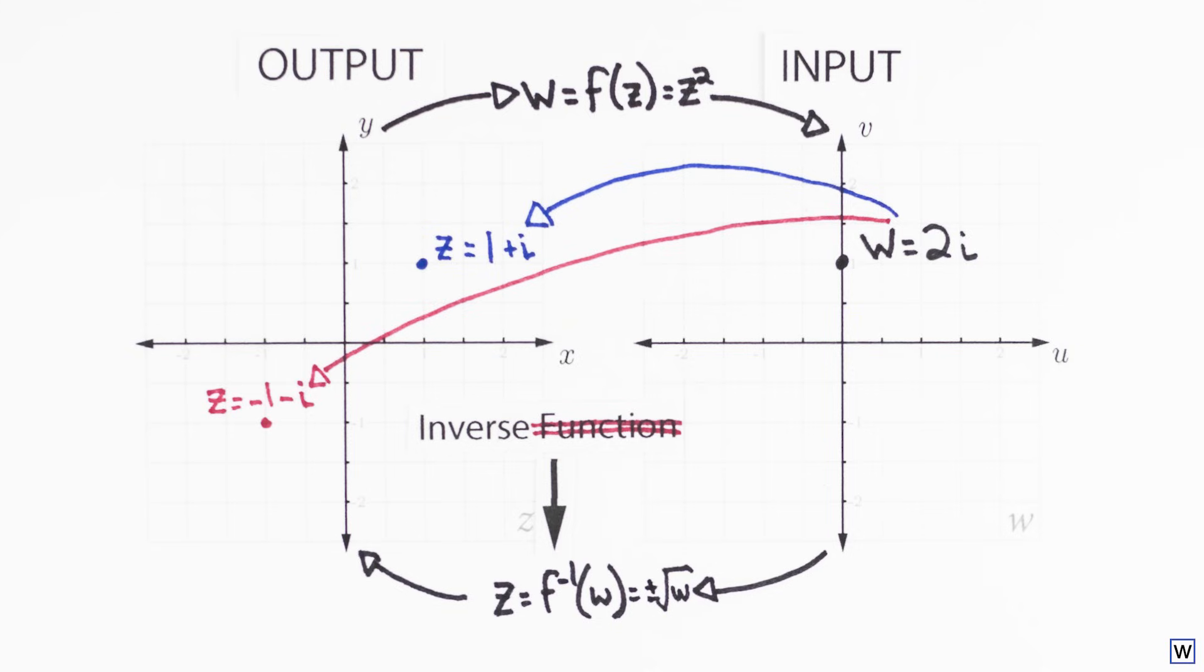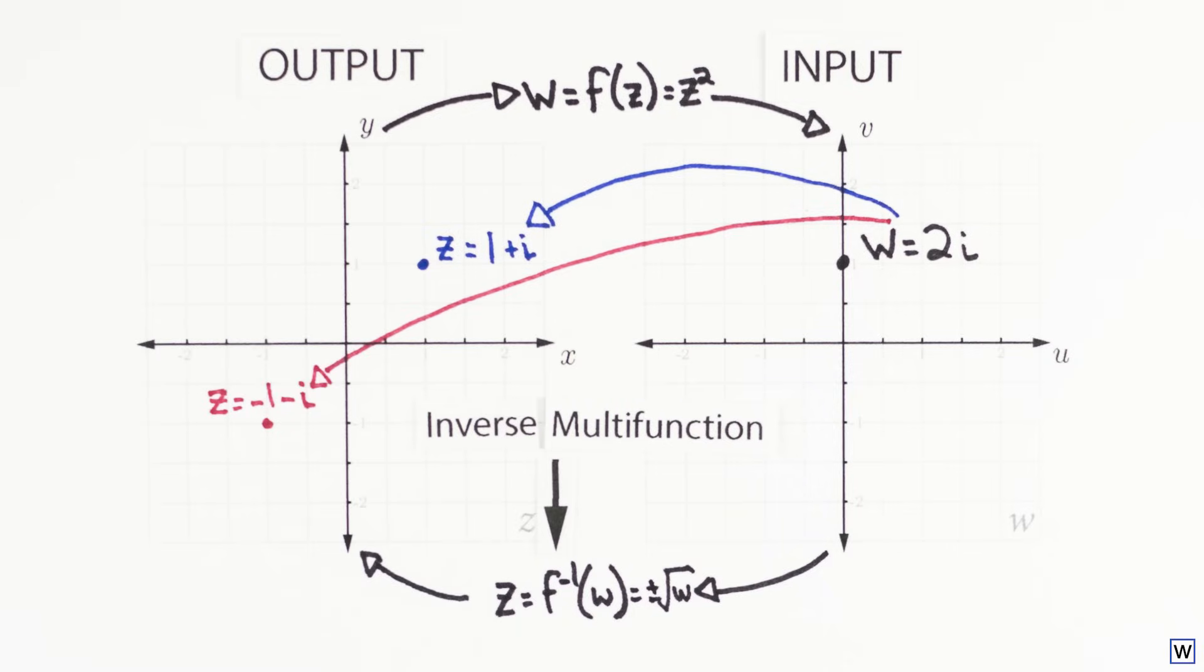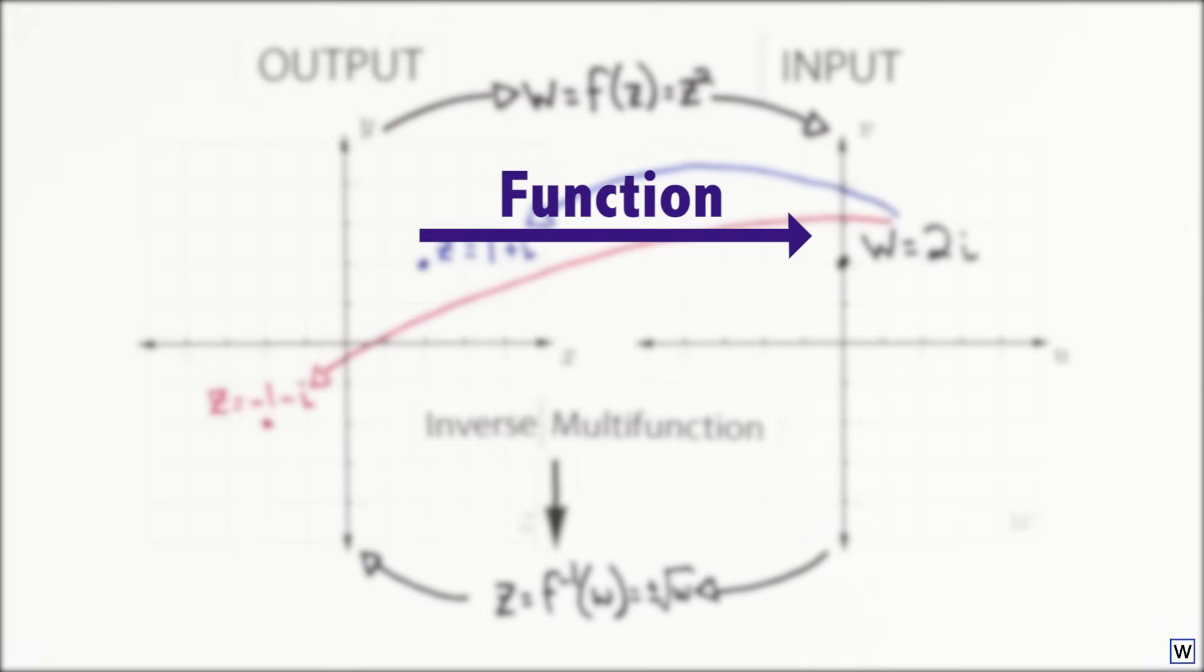To make things nice and confusing, non-functions like this are called multi-functions. So our mapping is the same in either direction, but taken from z to w is considered a function, but from w to z is considered a multi-function, which isn't really a function.